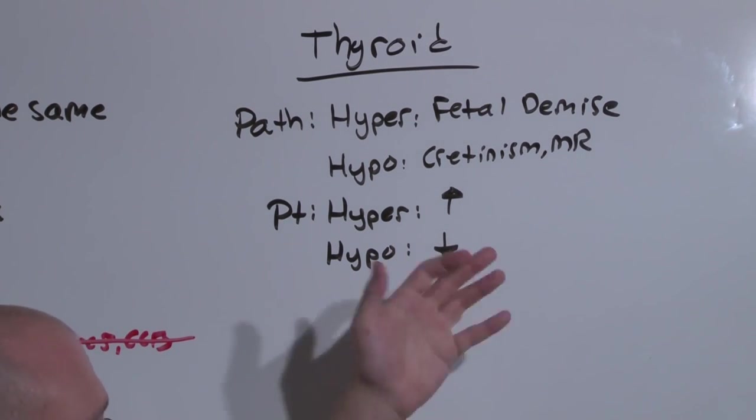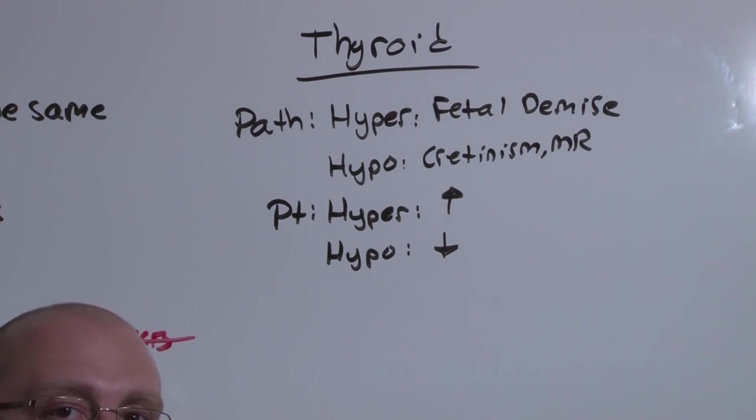When they're hypothyroid, everything's moving slower. They're going to be slower to think, they're going to be cold when everyone else is hot, they're going to have weight gain and constipation, bradycardia.